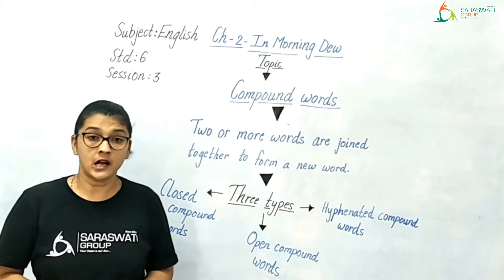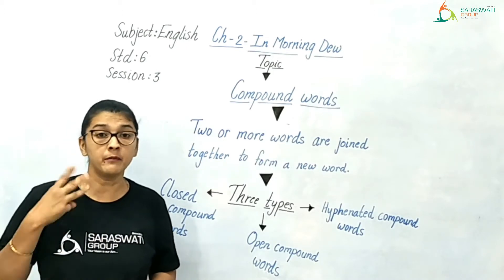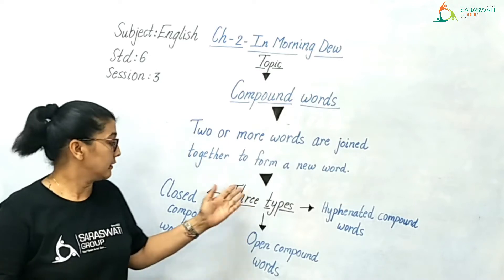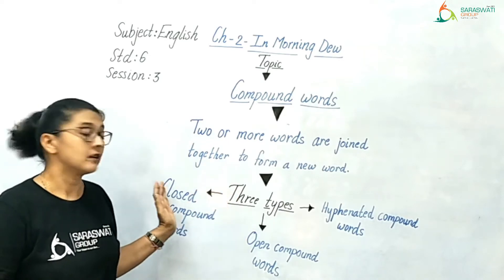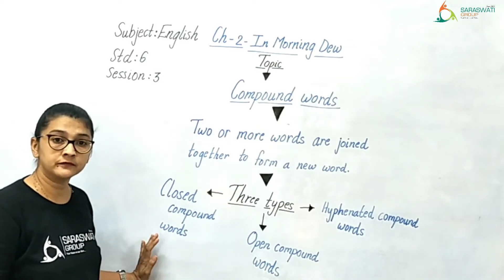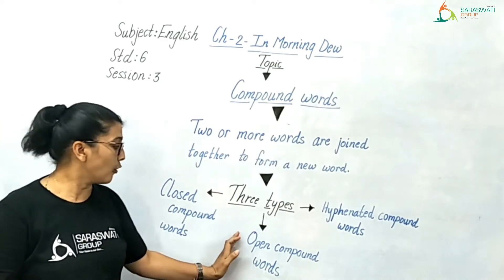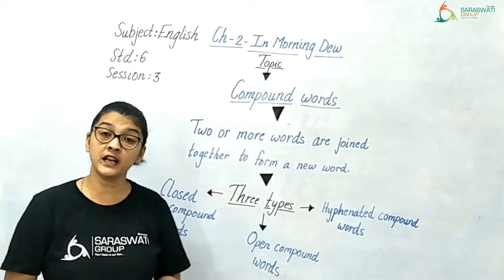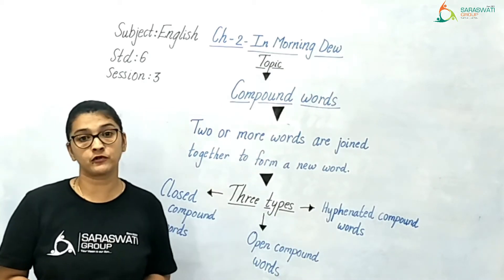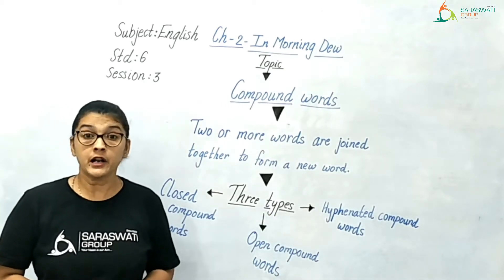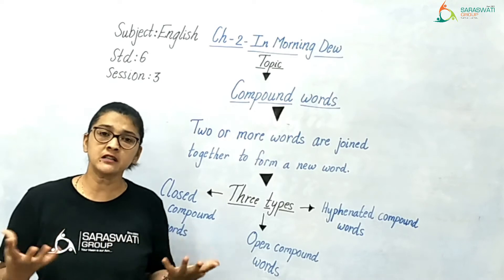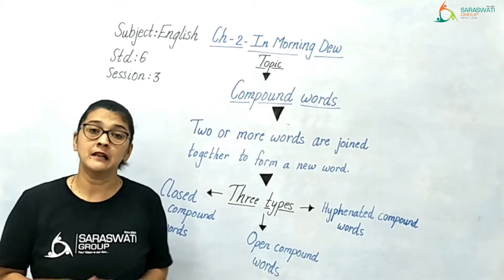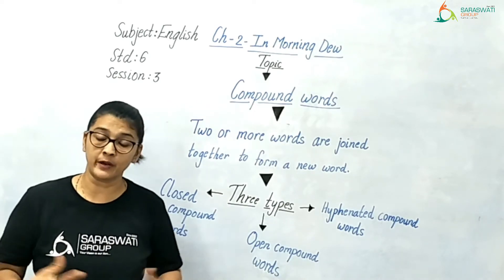Now there are three main types of compound words: closed compound words, open compound words, and hyphenated compound words. Let us see the difference between all three types one by one.